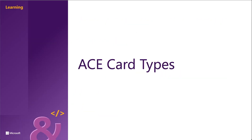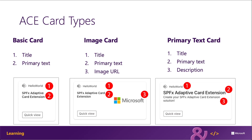Viva Connections and the SharePoint Framework support a few different types of cards for ACEs. These include the basic card view, the image card view, and the primary text card view. The basic card template supports two properties: the title of the ACE, typically set when creating the project with the Yeoman Generator for the SharePoint Framework, and the primary text of the ACE, which provides some context to the user about the card.